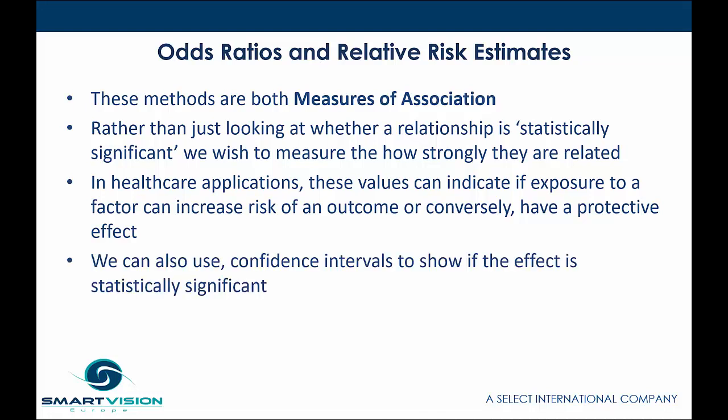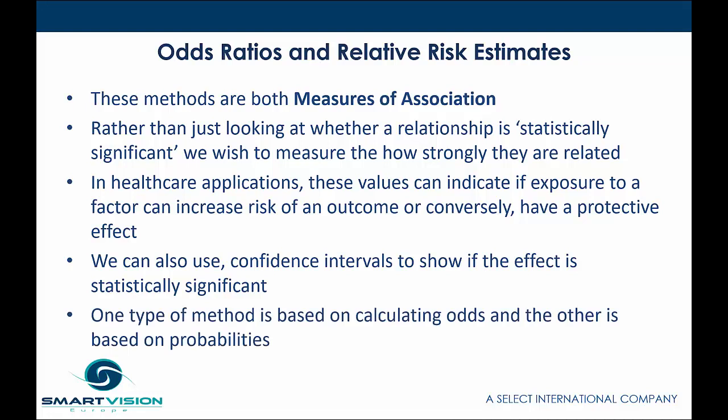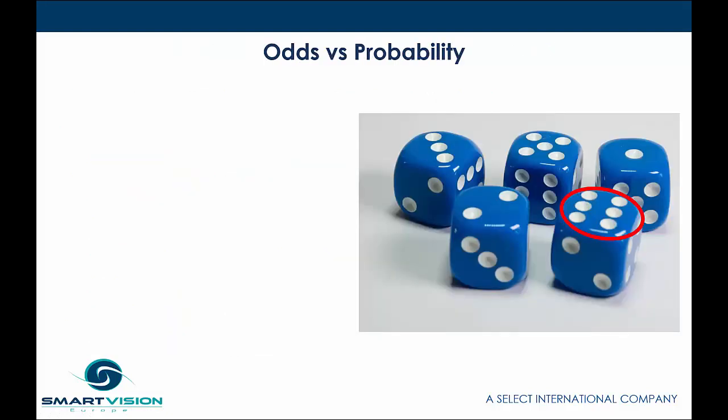We can also use confidence intervals to show if the effect itself is statistically significant. There are two methods here: one is based on calculating the odds and the other is based on probabilities. Before we look at these two values and see how they're calculated within SPSS Statistics, let's take a moment to remind ourselves of the difference between odds and probability values.